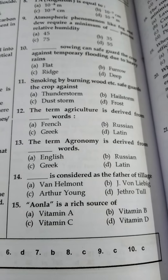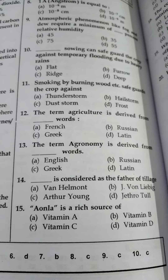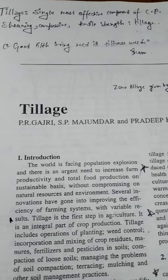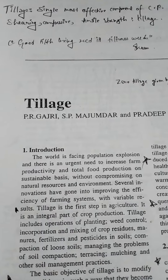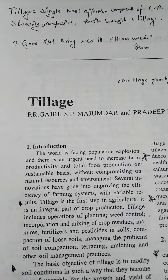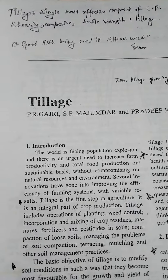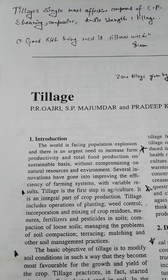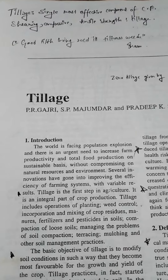Question 14: Jethro Tull is known as the Father of Tillage. Tillage involves shearing, compressive and tensile strength. There is a statement: good tillage leads to a good seedbed, otherwise faulty tillage practices lead to a lot of weeds. This statement is given by Frim. The term 'zero tillage' is given by Jethro Tull — remember it.